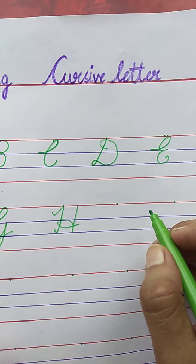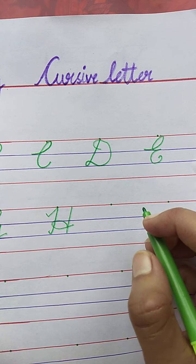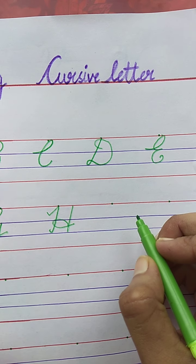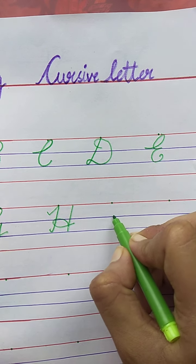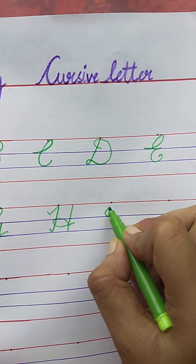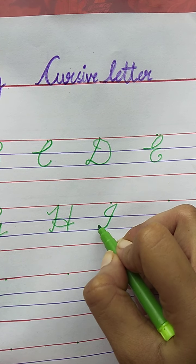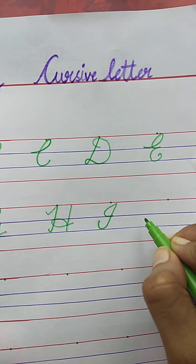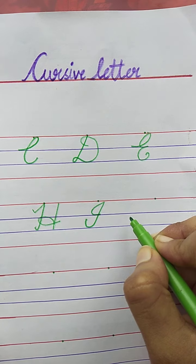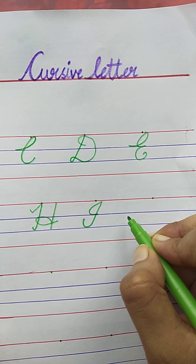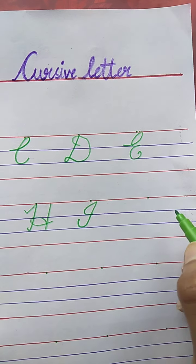Now, the next letter is I. I for Igloo. Very good. The spelling of Igloo is I-G-L-O-O. Igloo.